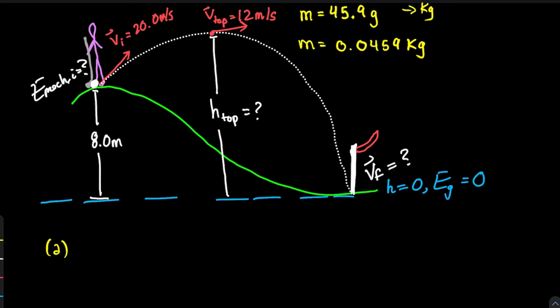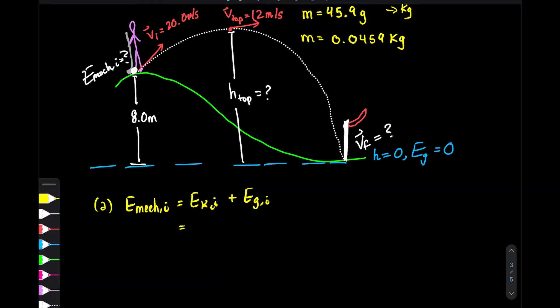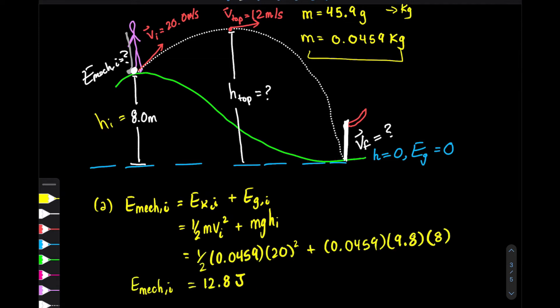The first thing we calculate is the total mechanical energy initially. Mechanical energy is composed of kinetic energy and potential energy. Kinetic energy is one-half m v_initial squared, and potential energy uses the initial height. The initial height is eight meters, the initial speed is 20 meters per second, and the mass is converted to kilograms. Plugging these into the calculator, we get approximately 12.8 joules.